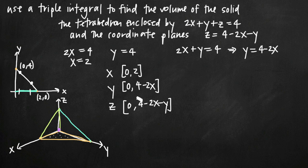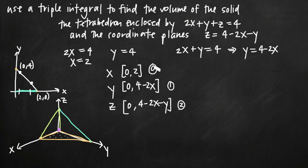Now we figure out the order of integration by looking at the number of variables in each set of limits. The limits for z have two variables (x and y). The limits for y have one variable (x). The limits for x have zero variables — just constants. So we integrate in descending order: first with respect to z (two variables), then y (one variable), then x (zero variables). Order: z, then y, then x.